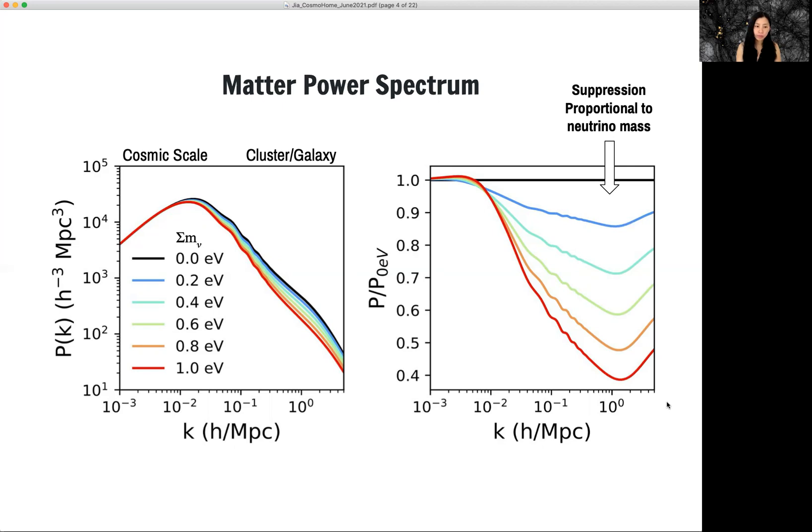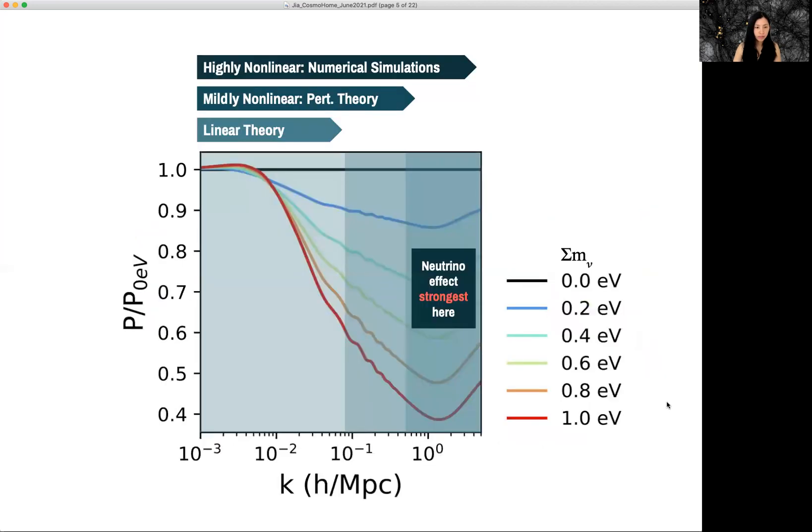In order to model neutrino masses accurately, people can take different approaches. On very large scales, cosmic scales, we can use linear theory.